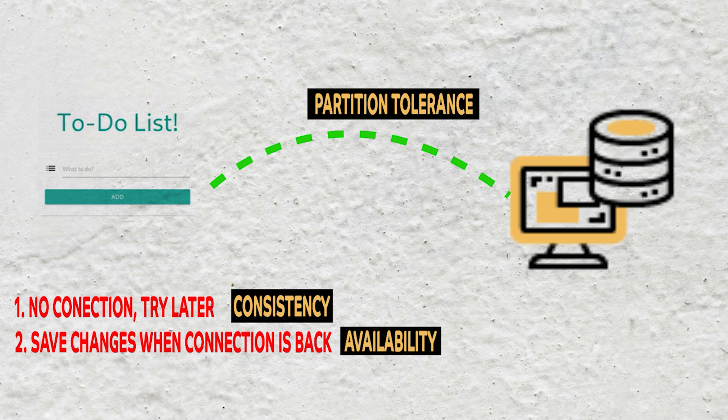Network outages, both temporary and permanent, are a fact of life and occur whether you want them to not. Understanding the trade-offs available to you in the face of network errors and choosing the right path is vital to the success of your application.